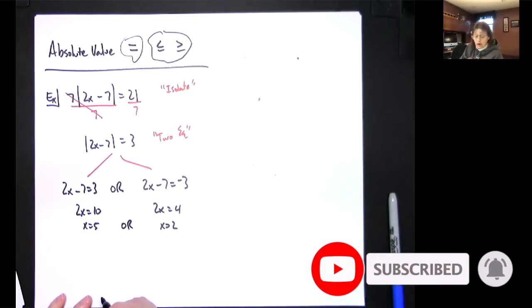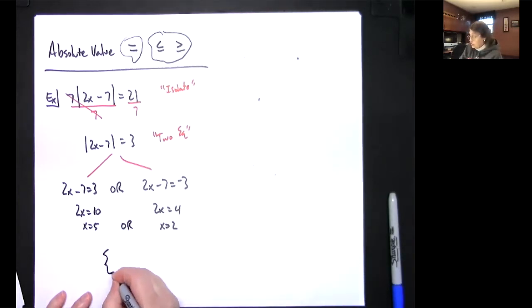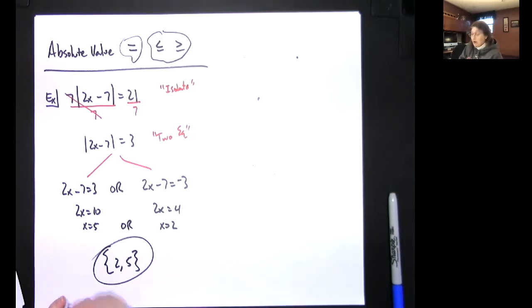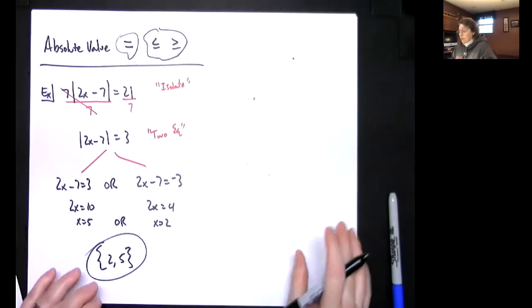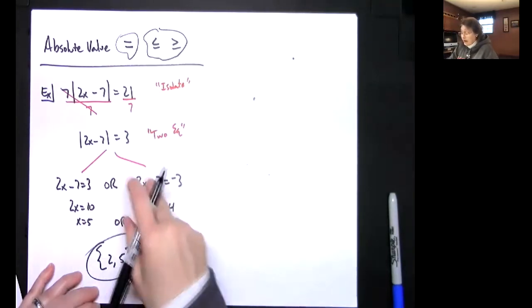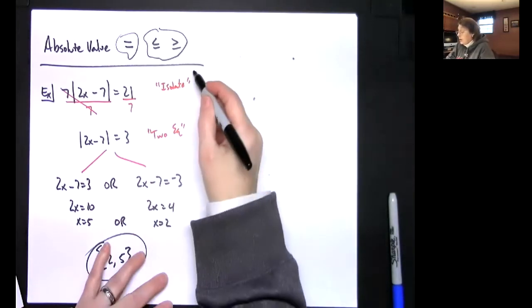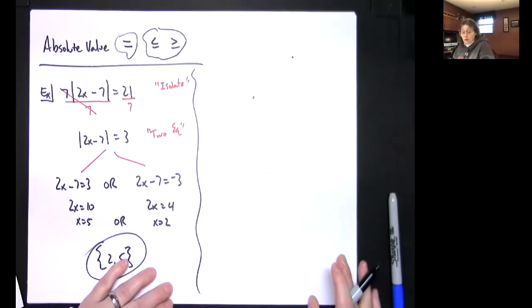And then solution set, because this is an or, they're just going to ask for a nice little solution set, so {2, 5}. Because it's just an equal sign. When it's an equal sign less to remember. Isolate and break it up into two. But when you do the inequality, that's where we really have a lot of things to remember.